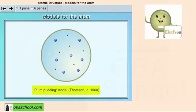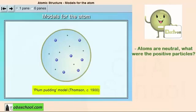The first one is, if an electron is negatively charged and atoms are neutral, what were the positive particles? And the second question is, where and how were the electrons arranged?